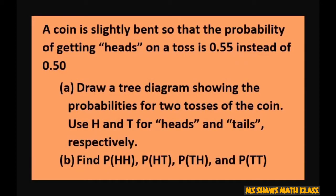Hey everyone! A coin is slightly bent so that the probability of getting heads on a toss is 0.55 instead of 0.50.